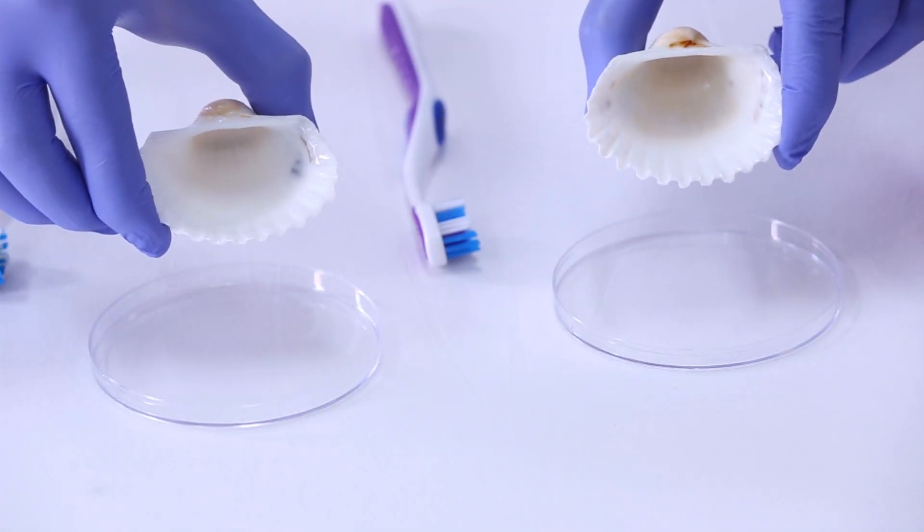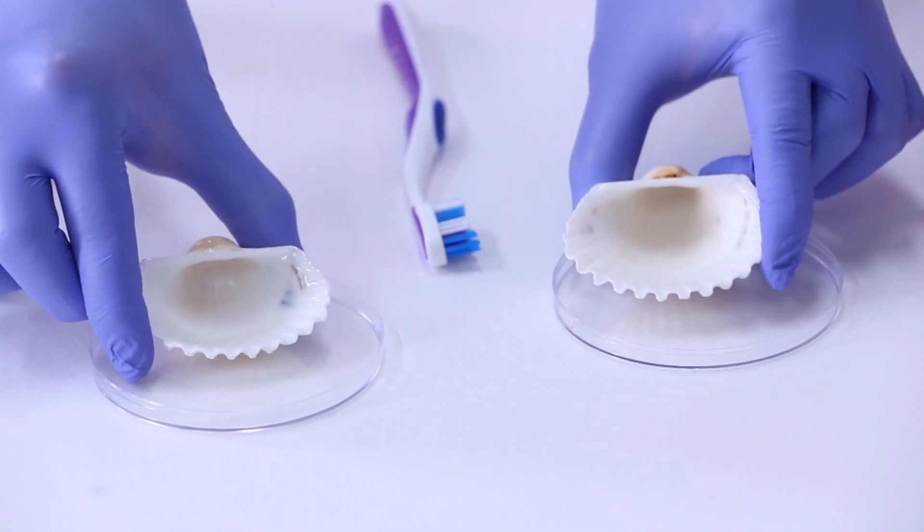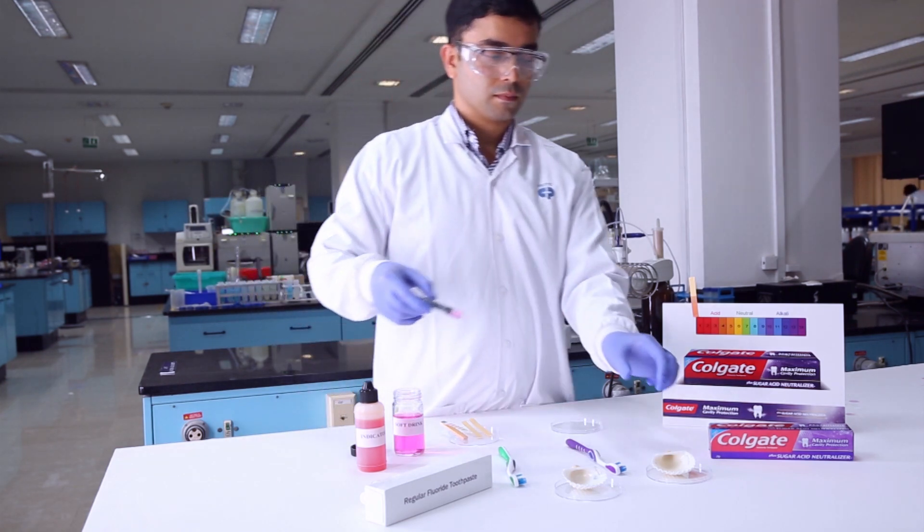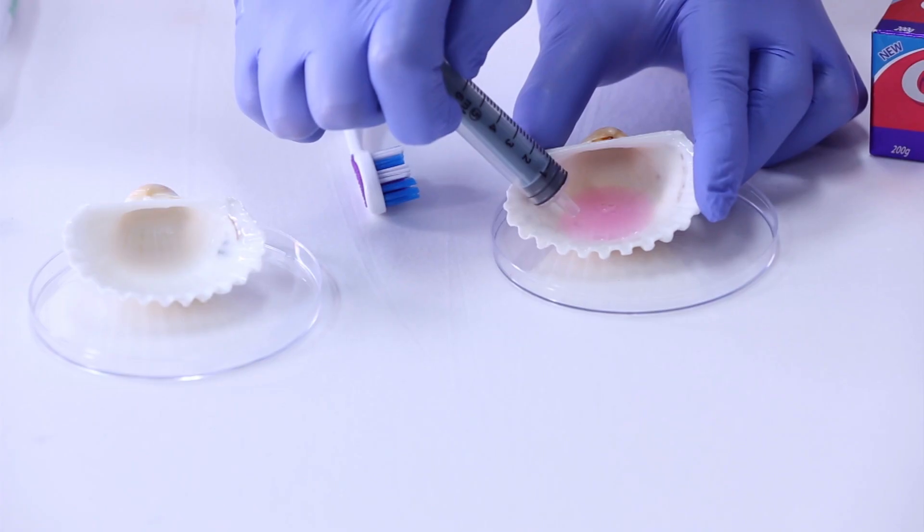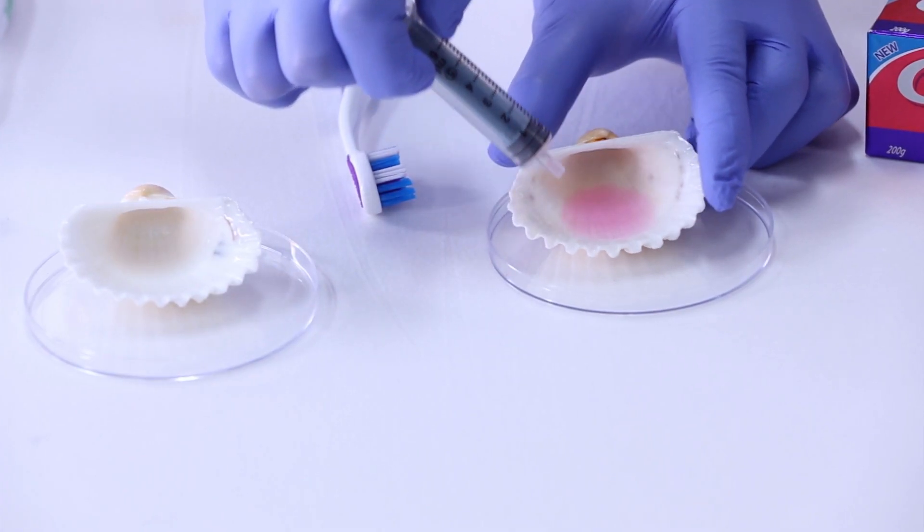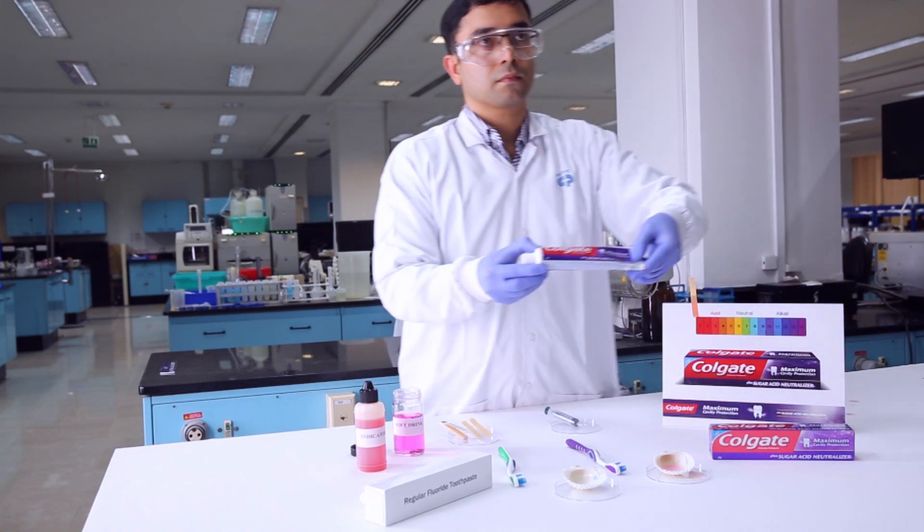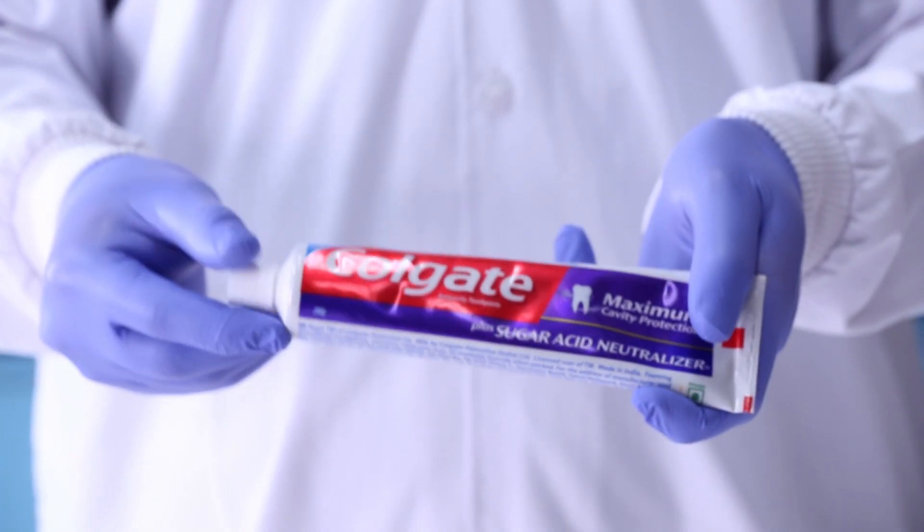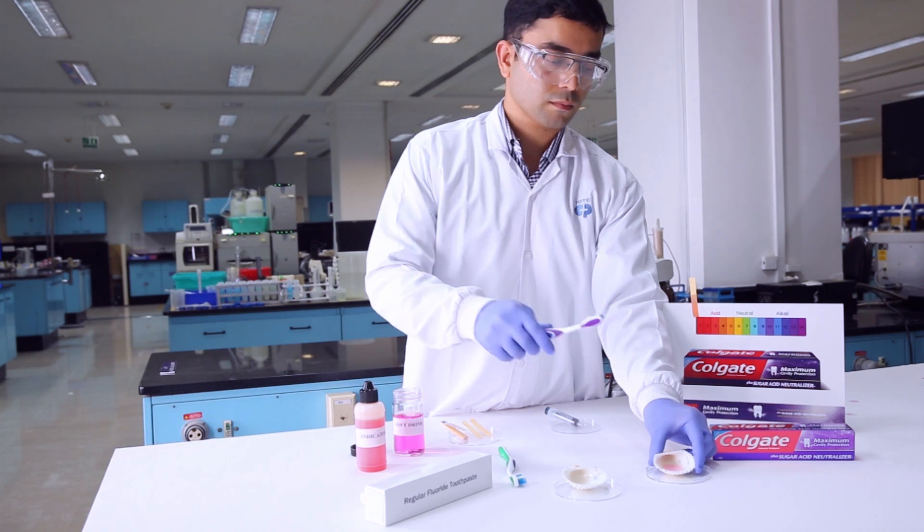These sea shells are used as representation of teeth. The acid plus indicator pre-mix solution is added to it. This simulates sugar acid attack on teeth. We now brush this shell using Colgate Maximum Cavity Protection Plus Sugar Acid Neutralizer.